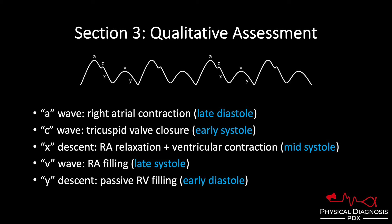Now we're in late systole, and the atrium just relaxed. It relaxed because it needs to fill with blood again so this whole thing can start back over. So when the RA begins to fill with blood, volume implies pressure. As it's filling with blood, volume and pressure go up, and you get the V wave.